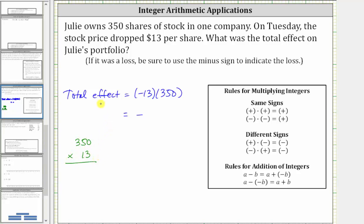We first multiply by three. Three times zero is zero. Three times five is 15. Record the five. Perform an exchange with the one. Three times three is nine, plus one is 10.